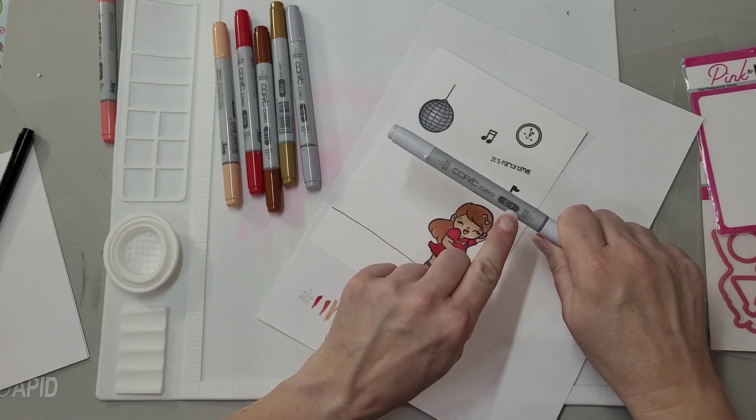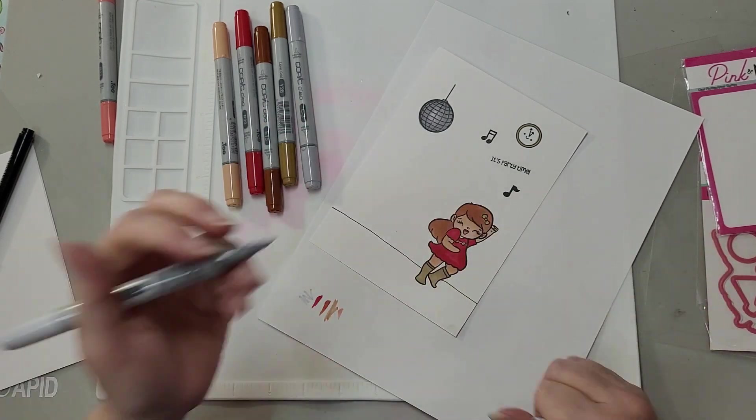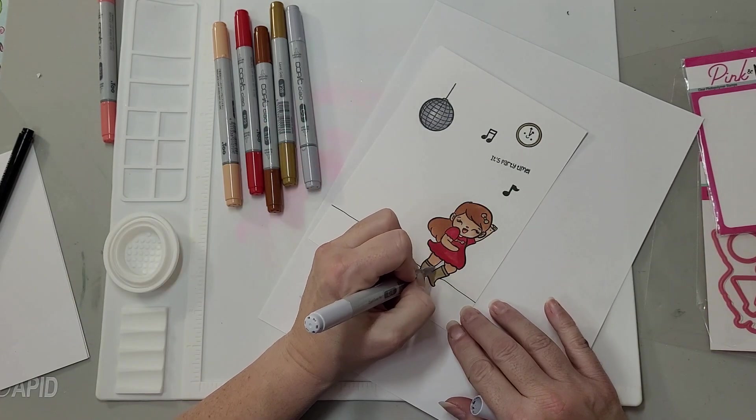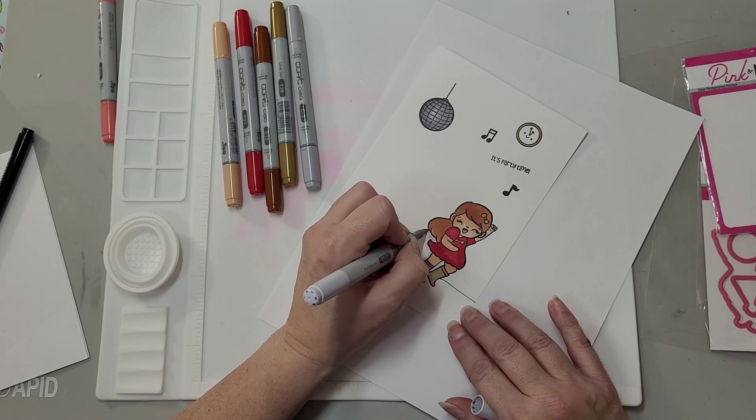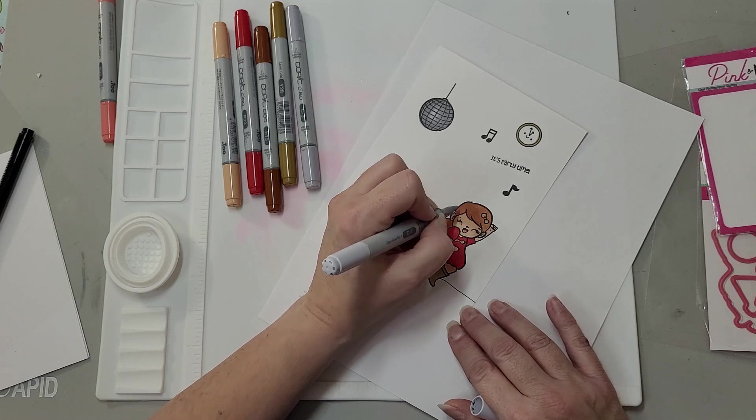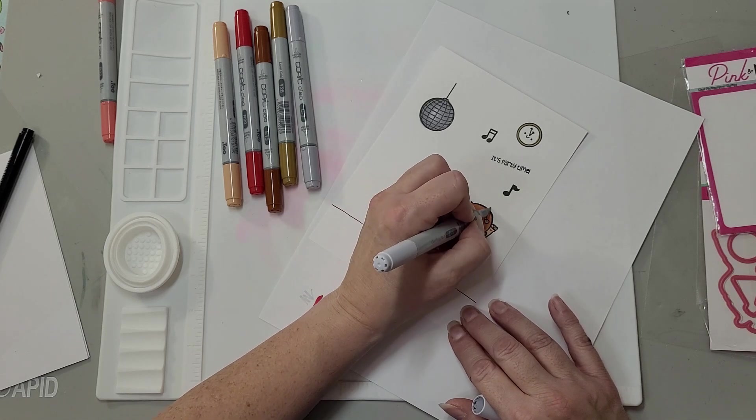Now I'm going to trace around her with C1 just to give her a little depth and separation from the back. This is where her shadows would be.